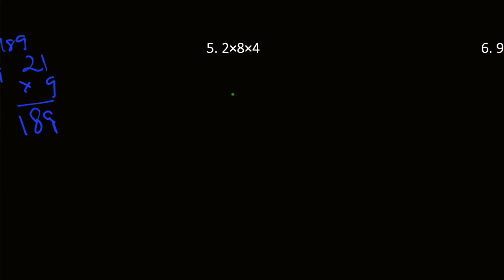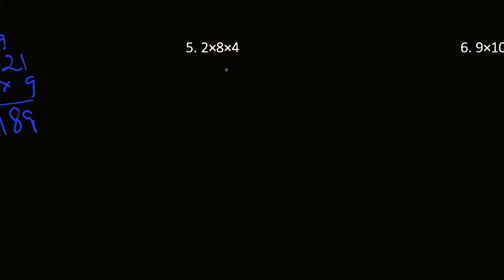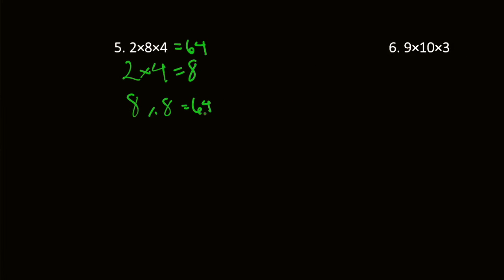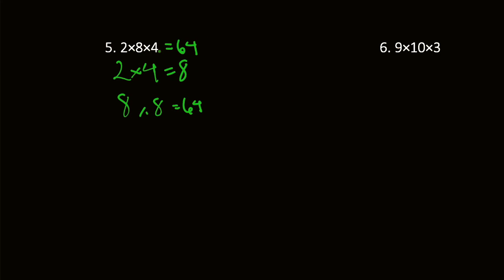Here we have 2 times 8 times 4. I'm going to group 2 and 4 because 2 times 4 is equal to 8. Then we do 8 times 8, which is equal to 64. It's easier to have single digits multiply by single digits so you don't have to write it all out. If I did 8 and 4, I would get 32 times 2 and would have to write it out.